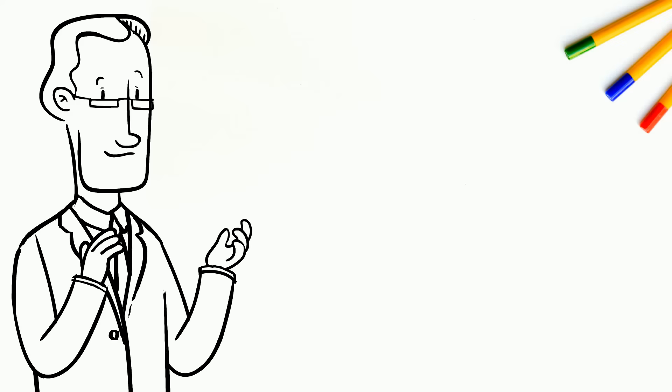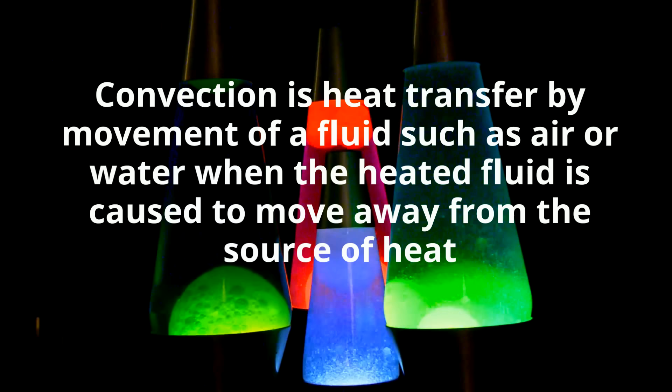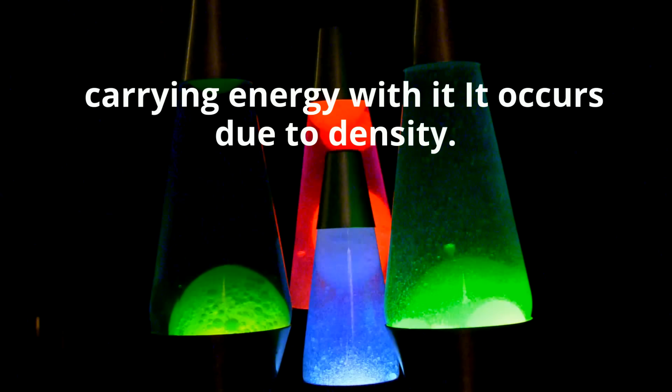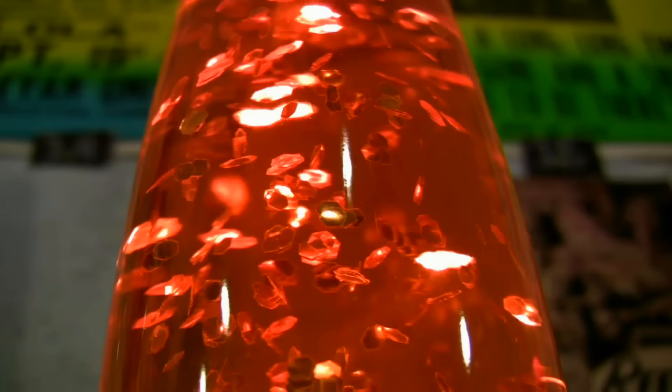Convection is heat transferred by the movement of a fluid such as air or water. When the heated fluid is caused to move away from the source of heat, carrying the energy with it. It occurs due to density. Lava lamps are examples of convection. As the liquid is heated, it rises and falls as it heats and cools.